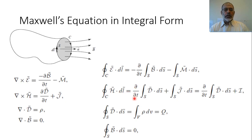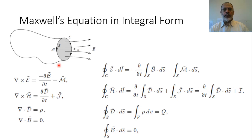The second Maxwell equation in integral form: the closed loop integral of the magnetic field H equals the partial derivative with respect to time of the integral of D dot dS over the surface area, plus the integral of J dot dS over the surface area. The integral of the current density dot dS equals the current passing through this surface area, so we can write it as partial by partial t of the integral of D dot dS plus I, where I is the current passing through the surface.